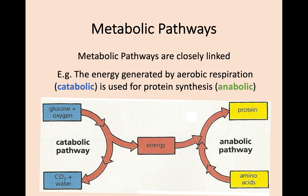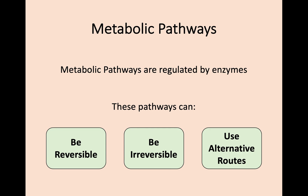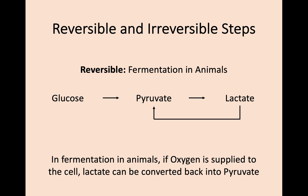We've mentioned that metabolic pathways are regulated or controlled by enzymes. There are different ways that these reactions can go: some can be reversed, some are irreversible so they cannot be reversed, and others have more than one pathway or route that they can take. For example, fermentation in animals is a reversible reaction because when no oxygen is available, pyruvate is broken down into lactate. However, when oxygen then eventually becomes available, the pathway can be reversed — that lactate that was produced can be converted back into pyruvate. So this is a good example of an enzyme reaction that has a reversible step.